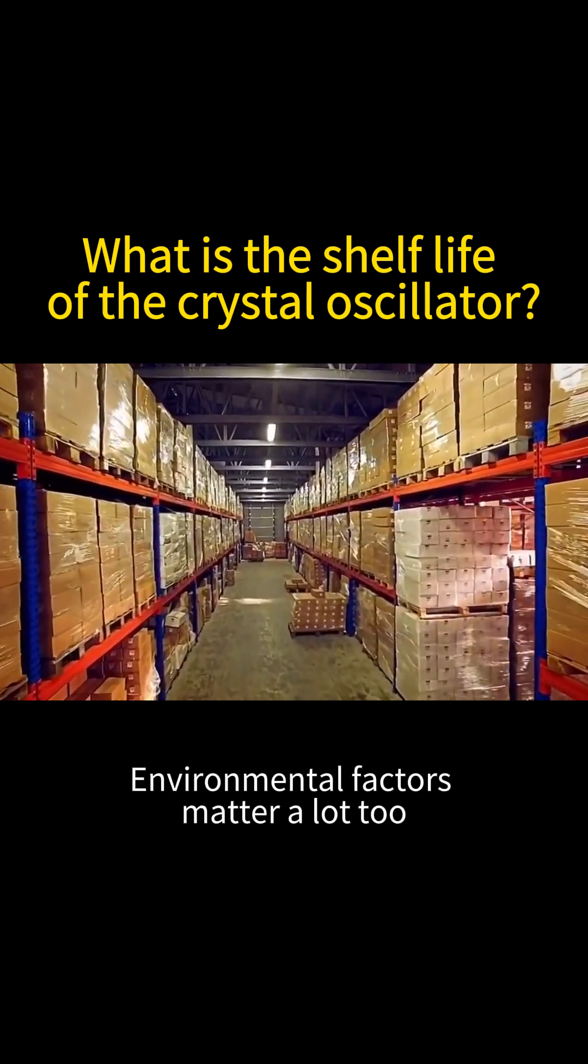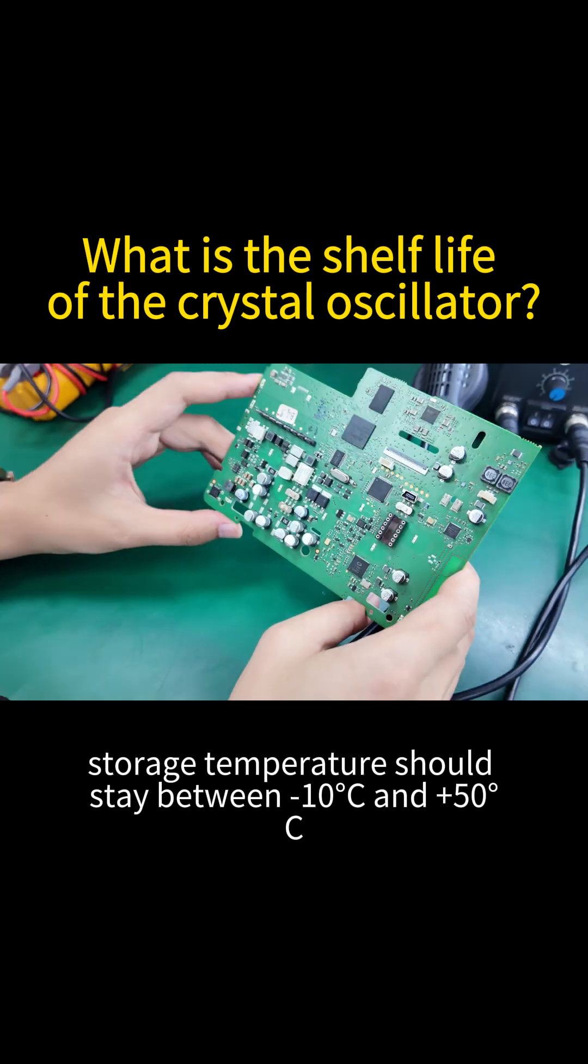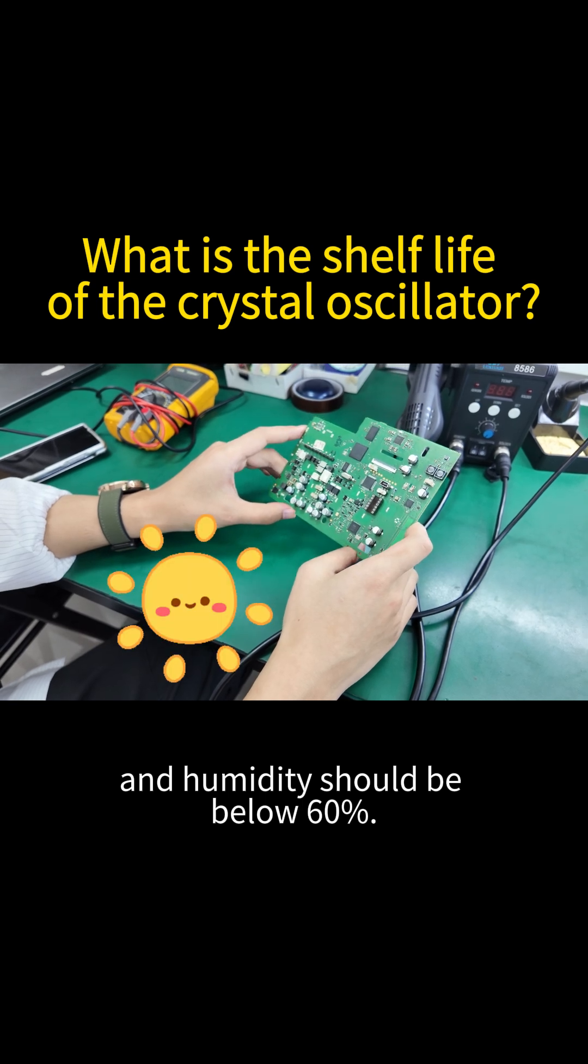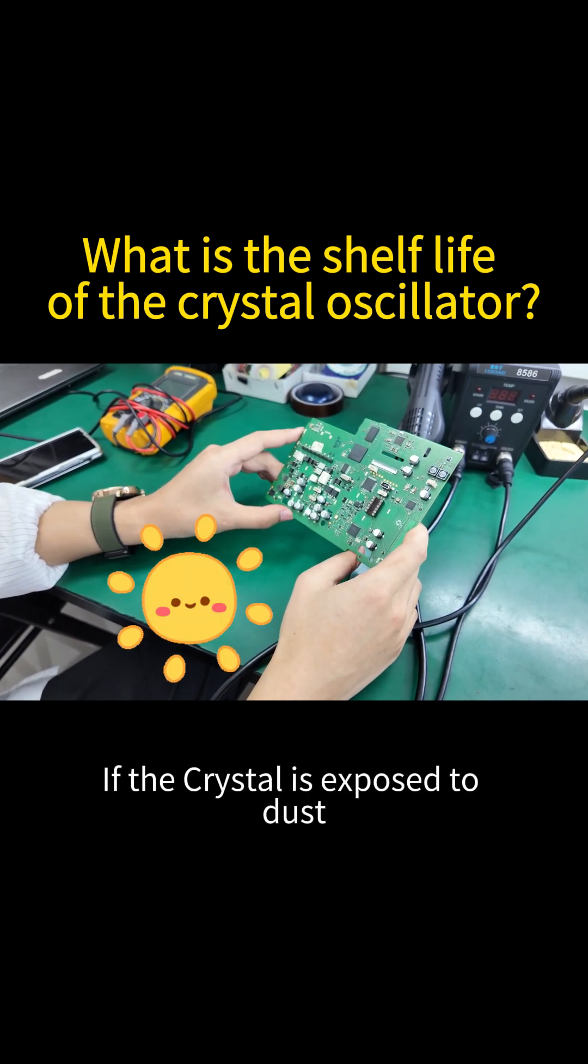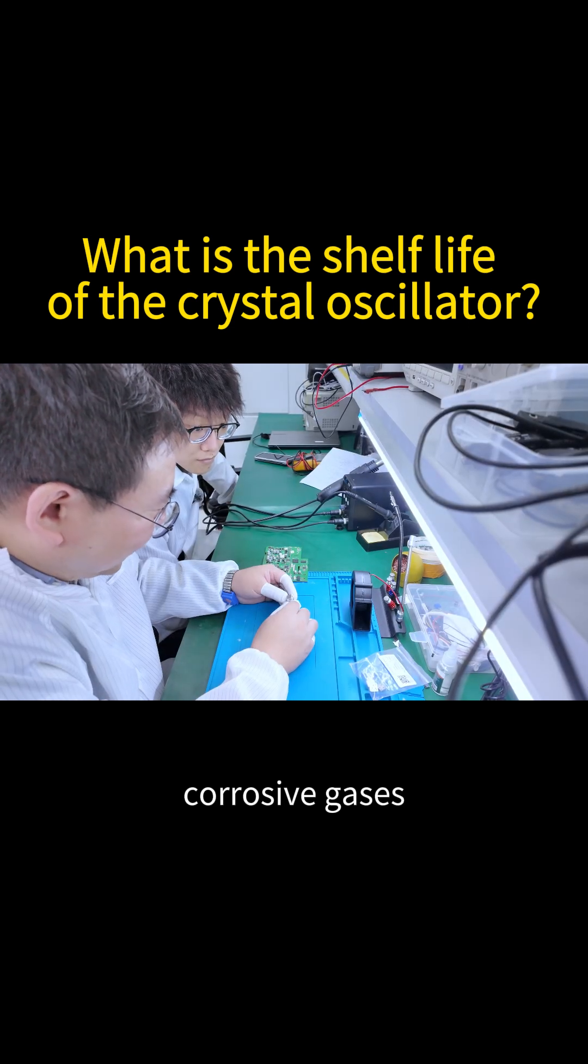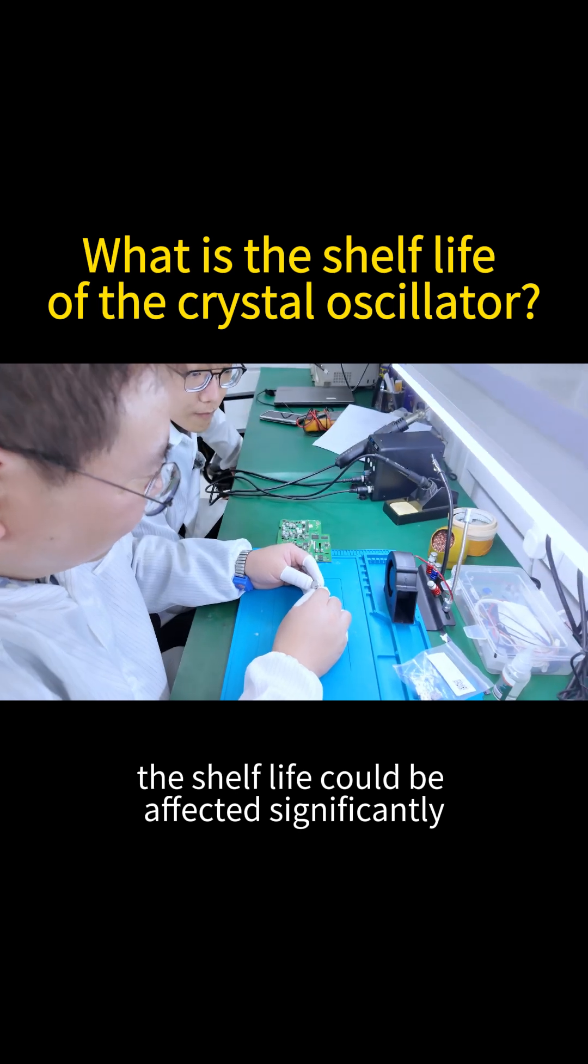Environmental factors matter a lot too. Ideally, storage temperature should stay between minus 10 degrees C and plus 50 degrees C, and humidity should be below 60%. If the crystal is exposed to dust, direct sunlight, corrosive gases, or strong magnetic fields, the shelf life could be affected significantly.